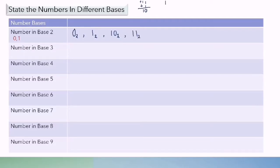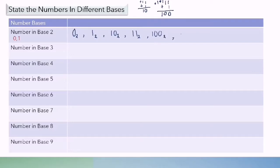The number after 1, 1 base 2: 1 plus 1, full already, so plus 1 at the front. 1 plus 1 again, full already, plus 1 to the front. So we have 1, 0, 0, 0 base 2. And so on.